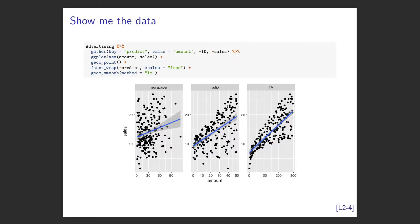Next I take my data, split it into long form using gather, then pipe it into ggplot. The x-axis is amount, the y-axis is sales, I put some points on there, I've wrapped them so I've got facets - one for each individual thing I can spend money on - and I've added a linear model using geom_smooth.